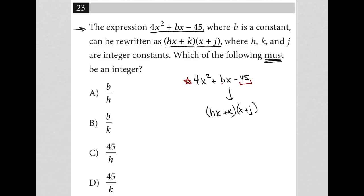But they would add up to positive b. My factored form tells me that those two letters must be k and j. And I know that k times j must equal negative 45. So those must be our two factors that equal negative 45.